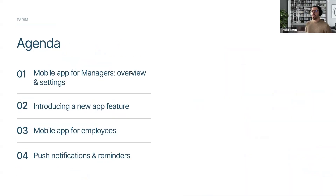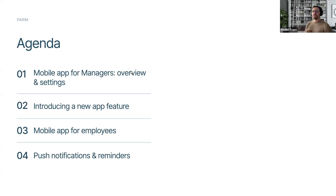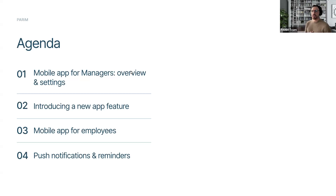Let's get into the actual agenda. First, we're going to start from the perspective of a manager, go through the settings, and see what is currently available. I'll also try to point out the differences and what capabilities you get from the mobile app compared to accessing it from a web browser on a laptop or computer. Then we'll go in and I will introduce one of the new app features — something we are planning on releasing very soon, but currently partially released for iOS. Then we're going to go over the mobile app for employees. And finally, we're going to go over push notifications and reminders, some of which are accessed via the mobile app and some via the web browser.